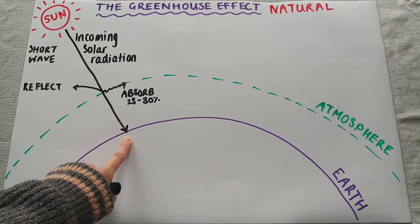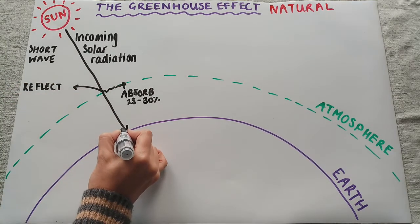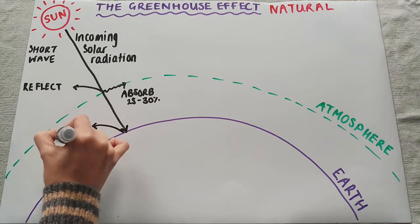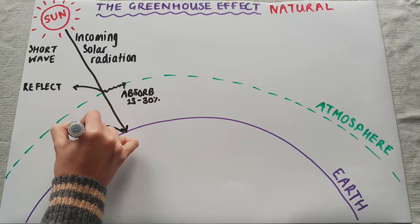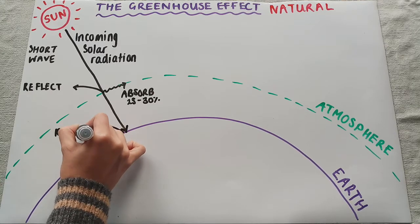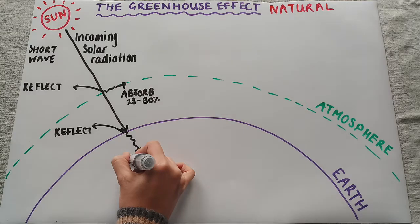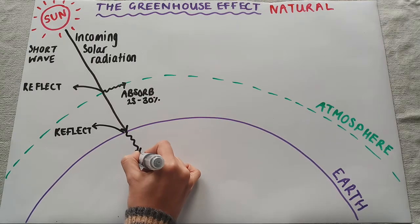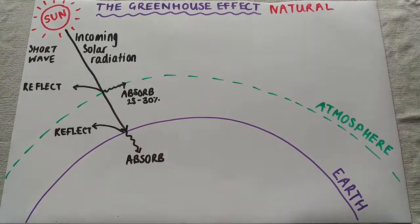When this incoming solar radiation reaches the earth, some of it will be absorbed by the earth. So that's what happens with the solar radiation — the short wave radiation.